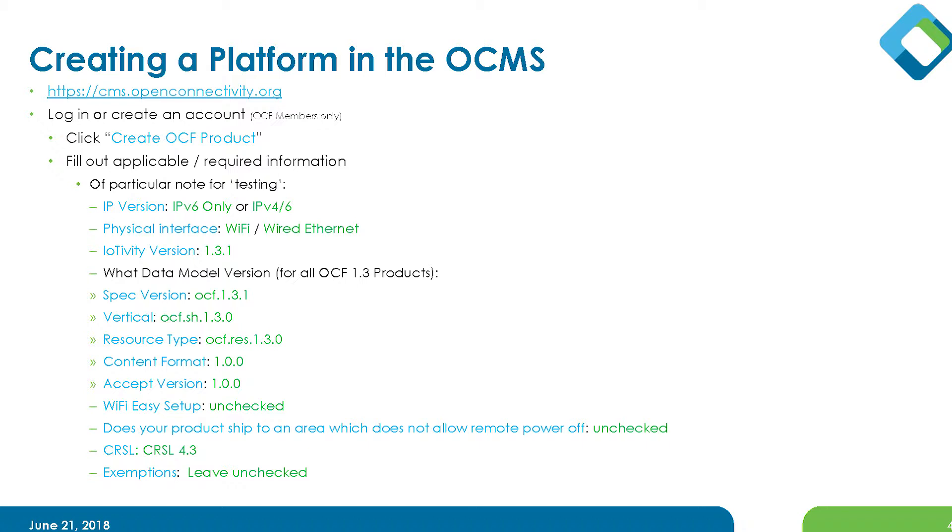You also select which certification requirements status list you're conforming to, and what roles your device plays — is it a client or a server? You then indicate whether you are supporting some of the optional core resources. Finally, you select the device type. Certain device types require certain resource types, and once you select the device type, the required resource types will be automatically selected for you.